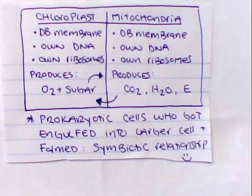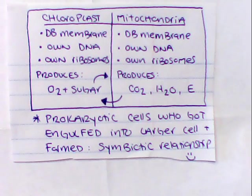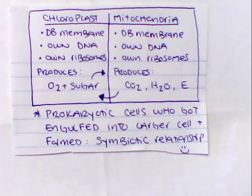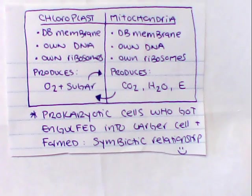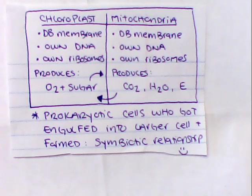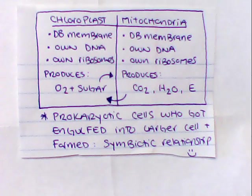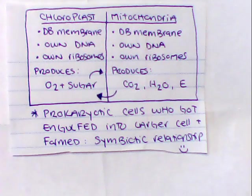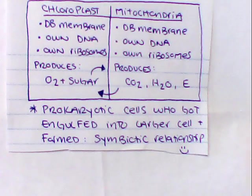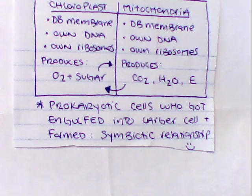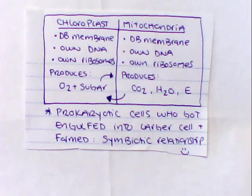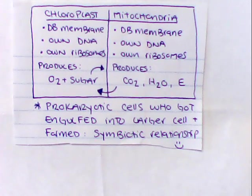The theory in the past is that the chloroplast and the mitochondria used to be their own prokaryotic cells who got engulfed into a larger cell and somehow formed a symbiotic relationship. That larger cell did not eat the chloroplast or mitochondria and somehow they survived, and that symbiotic or mutualistic relationship allowed for the production of advanced eukaryotic cells in plants that we know today.